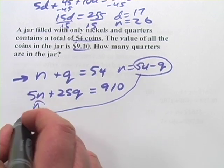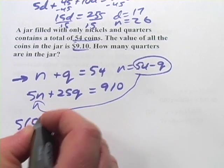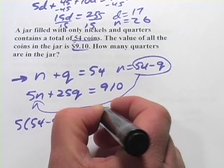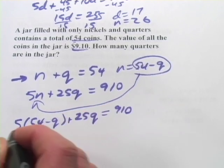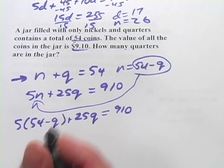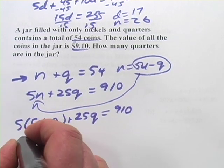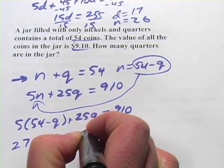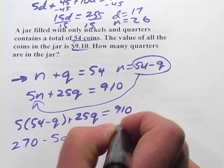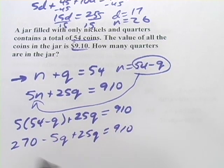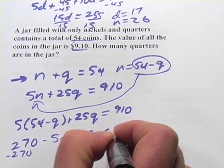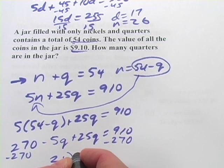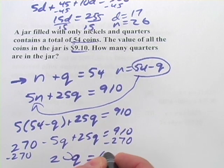So we've got five times fifty-four minus q plus twenty-five q equals nine hundred and ten. And let's see, five times fifty-four, that would be two hundred and seventy minus five q plus twenty-five q equals nine ten. So I'll want to combine like terms and also subtract this two seventy. And I think we're going to get twenty q equals six hundred and forty.